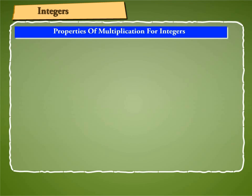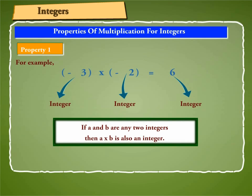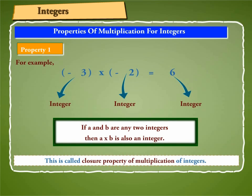About properties of multiplication for integers. Property 1: Let us multiply any two integers and see whether their product is an integer. For example, minus 3 into minus 2 is equal to 6, which is an integer. Thus, the product of any two integers is an integer. Hence, if A and B are any two integers, then A into B is also an integer. This is called the closure property of multiplication of integers.